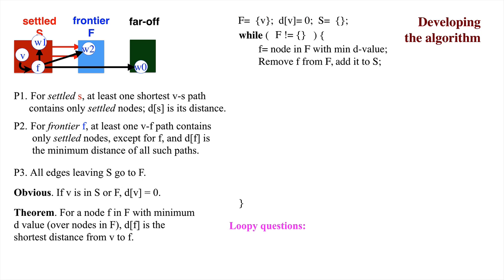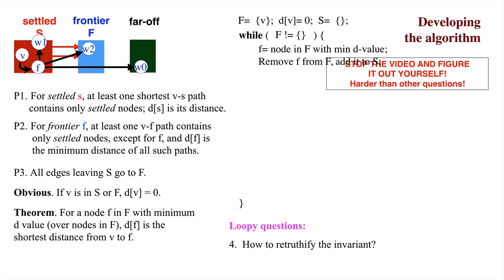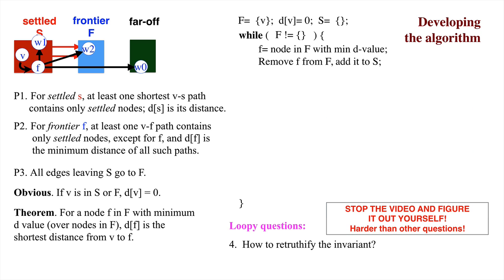Loopy question 4. How is the invariant maintained? p2 may be false because there may be a path from v to f to a node like w2, with all but w2 in the settled set, and it may have a shorter distance than d sub w. p3 may be false because there may be an edge from the settled to the far offset, like node w0. Stop the video and think about how to truthify p2 and p3.